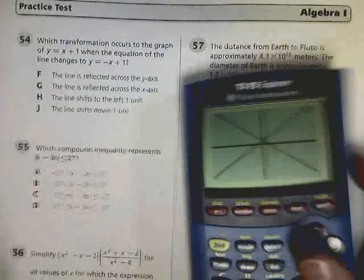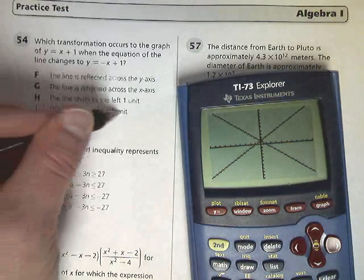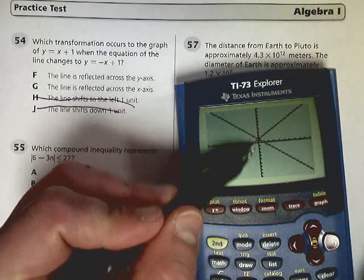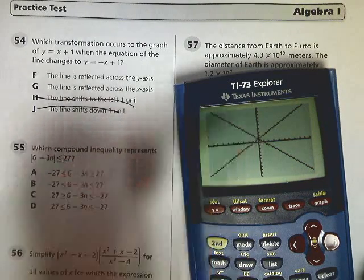So nothing changes in terms of it shifting up or down. It's on the same point, so anything that's just shifting is out. Shifting would mean that it moved on the axis, it moved up or down on the axis where it crossed. But they both cross at the same place.